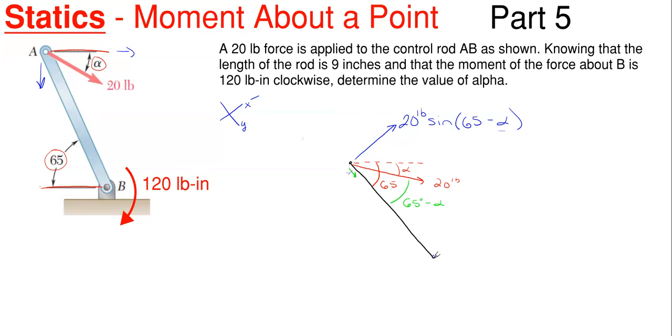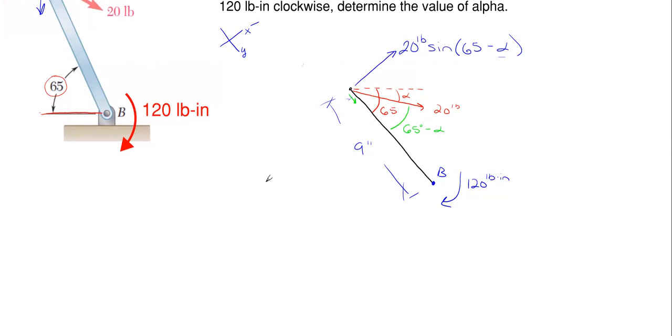So let's go ahead and put point B down here. We know that this distance is nine inches, which is given in the problem statement. So there's my perpendicular distance down to B. And this force times this perpendicular distance has to equal to 120 pound inches of rotation. So let's go ahead and put this formula together and solve for alpha.